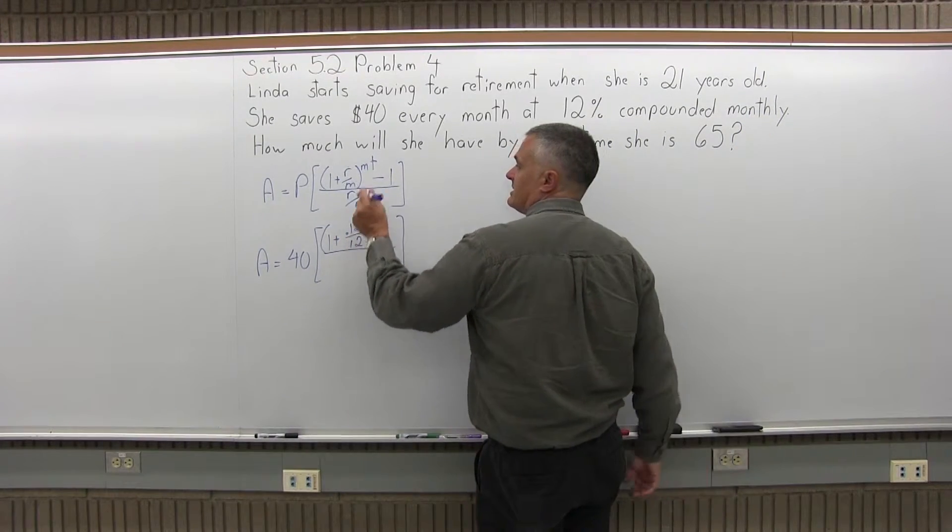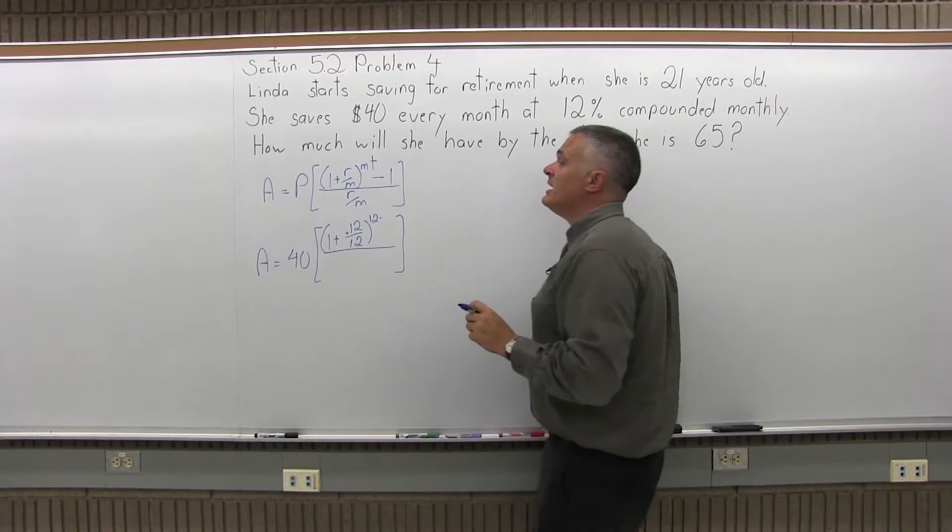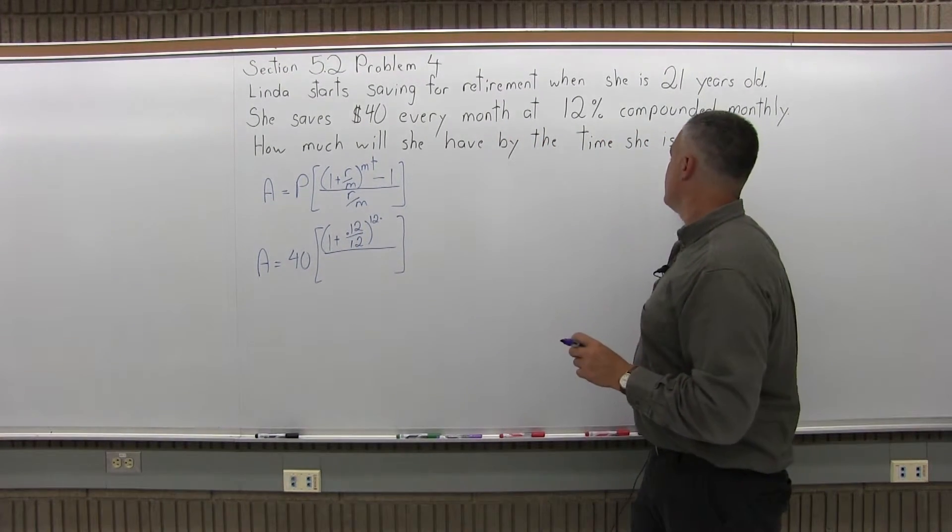You have an exponent of M times T. So M is 12 for monthly compounding. Now, the T is not 65. That's a common mistake. That's how old Linda is when she'll stop the investment.